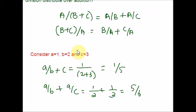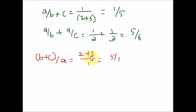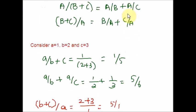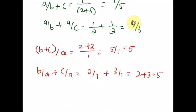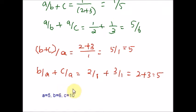Now let us try the right distributive property of division over addition. Using the same sample values a = 1, b = 2, c = 3, for the left side I get 5 over 1. For the right side, b over a plus c over a, using the same values, I get the same result from both sides. It also works for a = 5. While checking two examples is not enough to prove the right distributive property, it strongly suggests it is true — and indeed, it is. Division distributes over addition from the right, but not from the left.